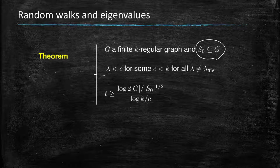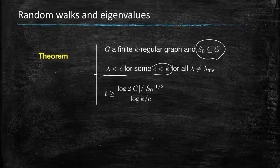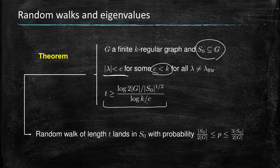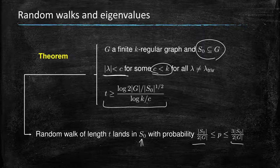More specifically, assume all the non-trivial eigenvalues have their absolute value bounded by some c, which itself is strictly less than the value of the trivial eigenvalue. Then, for a t greater than this value, a random walk of length t lands in s0 with probability that is almost the uniform probability—between 1/2 and 3/2 of the uniform probability of landing in s0. We would like this to be exactly uniform probability. What's also important is we want t to be small.